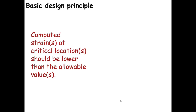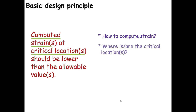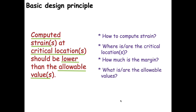There are certain terms that need elaboration: how do we compute strain? We compute strains by performing analysis. Where are the critical locations? The computed strain value should be lower than the allowable — not too much higher (unsafe) nor too much lower (over-designed and uneconomical). We need to check that computed strain values are lower than the allowable values, and we will also discuss how to determine the allowable value.